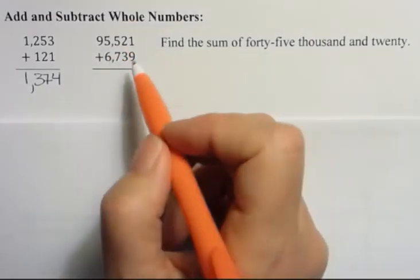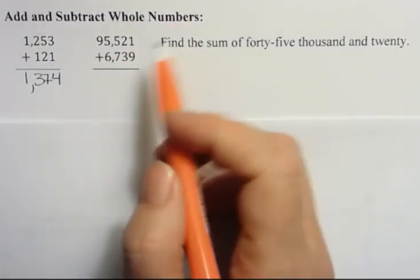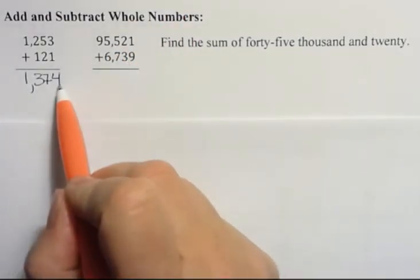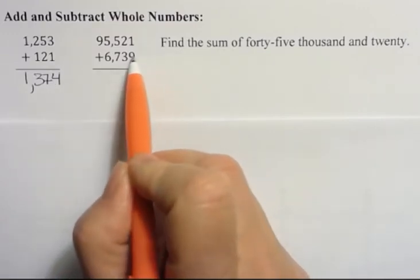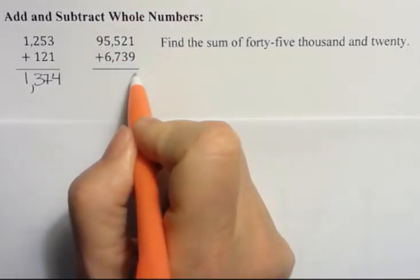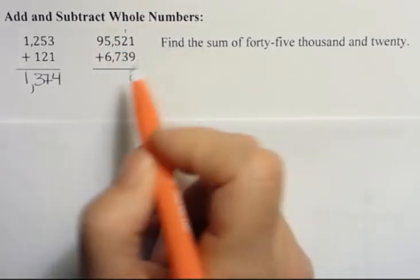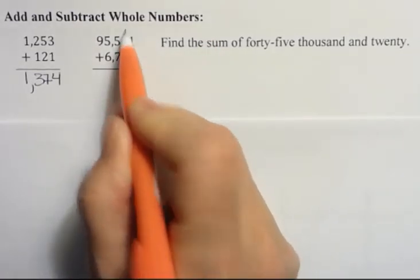But sometimes when you add numbers, you might have to carry a value because you can only put one number in each place value. So here I have nine plus one, which is 10. I put the zero and I carry the one. Three plus two is five, plus one is six.